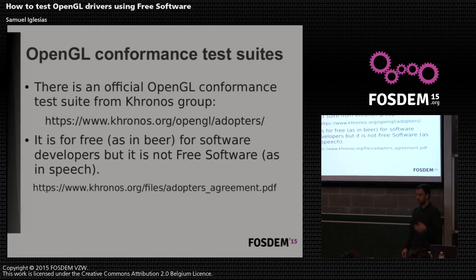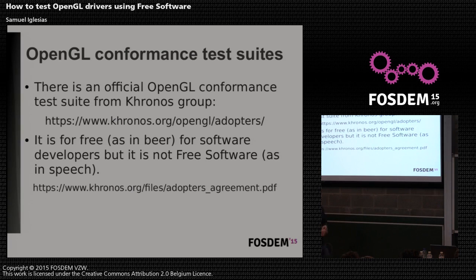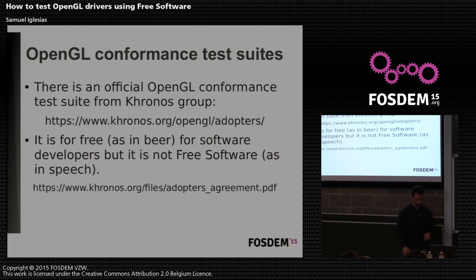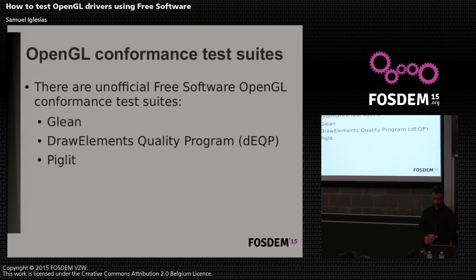Of course, the Khronos Group provides their own OpenGL conformance test suite, but although it's free for software developers, it's not free software actually. You have to sign an agreement that says more or less that you have access to the source code, but you cannot redistribute any modifications you make to that source code to third parties. So thanks to the community, we have official free software alternatives for those cases.